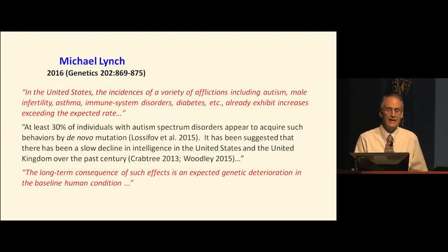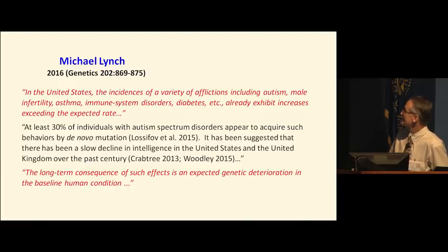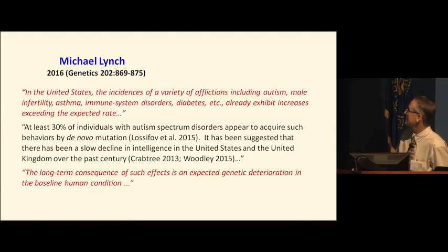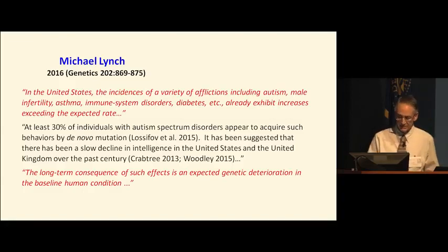In 2016, Lynch published that in the United States the incidence of a variety of afflictions including autism, male infertility, asthma, immune system disorders, and diabetes already exhibit increases exceeding the expected rate. He concludes that the long-term consequence of such effects is an expected genetic degeneration in the baseline human condition.